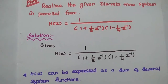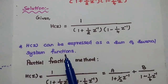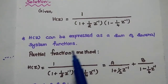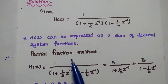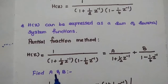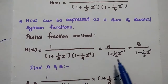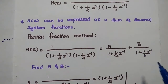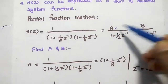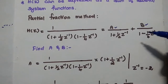In the solution part, first we write the given system function H of Z. We are going to express the system function as a sum of several system functions using the partial fraction method. So we write H of Z equal to A divided by (1 plus 1/2 Z power minus 1) plus B divided by (1 minus 1/4 Z power minus 1). Then we have to find out the values of A and B, and substitute those values back into H of Z.